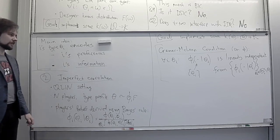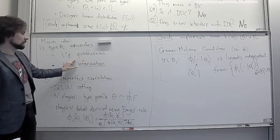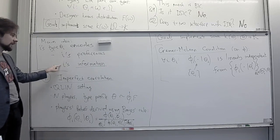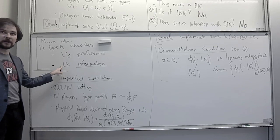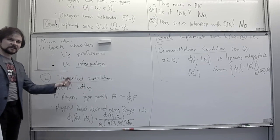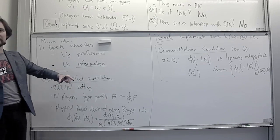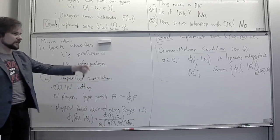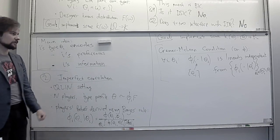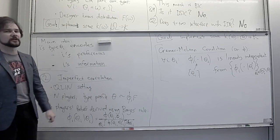Even if you cannot fully identify the type of player i based on the beliefs the player has about other players' types, you can still extract this aspect of information as the first step towards implementation. Then in the second step you can use all the toolbox we had for independent types. You can do this in a two-stage mechanism and then rely on information about player i's preferences.